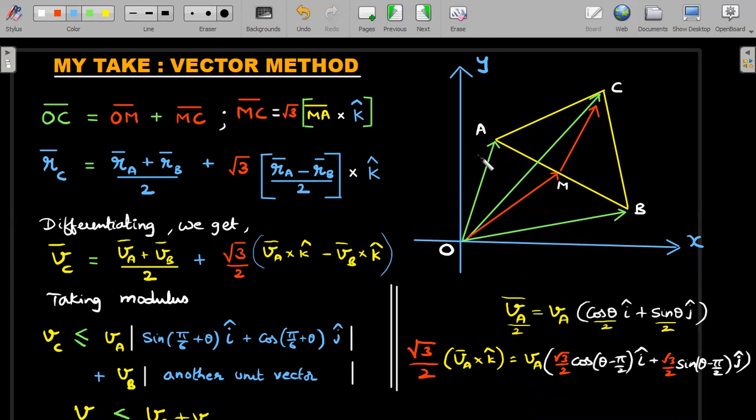Imagine my vA vector can be written as the magnitude of vA multiplied by (cos θ i-cap + sin θ j-cap), which is some unit vector in the direction of vA. If vA makes an angle θ with the x-axis, I think you all will be able to agree that you can write it that way. And then in that context, what would be the way of writing (√3/2) vA vector cross k-cap? vA vector cross k-cap gives me a vector which is perpendicular to vA - that means it may be in this direction. So if A makes an angle of θ with x-axis, then this one would make an angle of (θ - π/2) with x-axis.